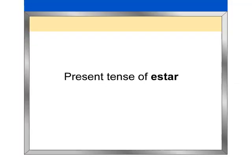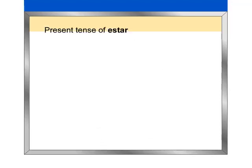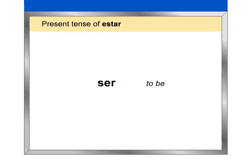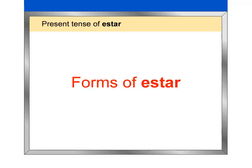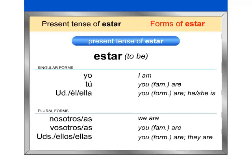Present tense of estar. You already know that ser means 'to be' in Spanish. But did you know that there is another Spanish verb that also means 'to be'? It's the verb estar. Here is how estar is conjugated in the present tense. Repeat after me the singular forms of estar.